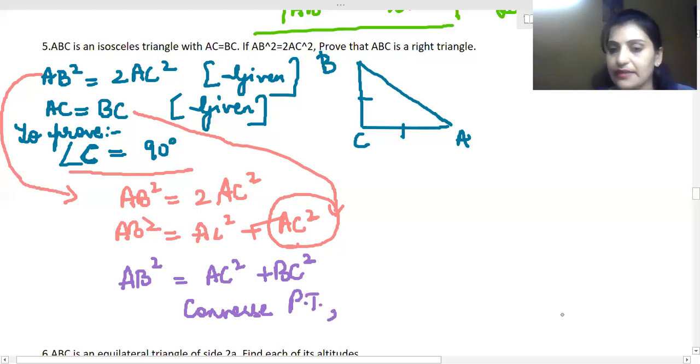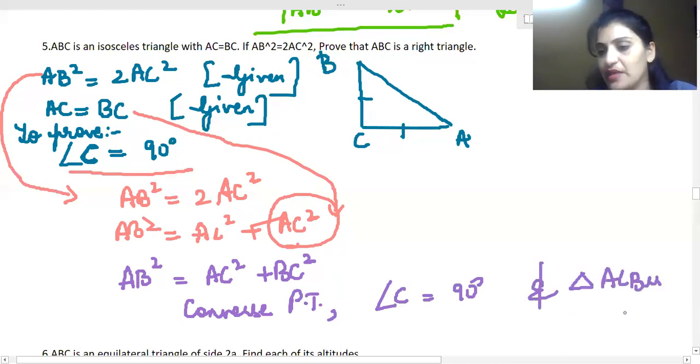we say that angle C is equal to 90 degree and triangle ACB is a right angle triangle. Okay? Is a right angle triangle?